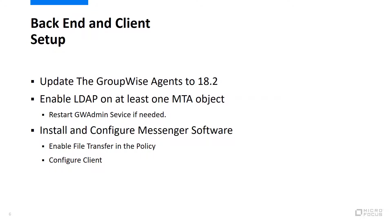First, you want to make sure your GroupWise backend is upgraded to 18.2 — there are some admin interface issues you might run into otherwise. Another requirement is that at least one MTA must have LDAP enabled. This isn't a new requirement, but if you're just setting that up, remember to restart the GW admin service on that server so the changes are enabled.